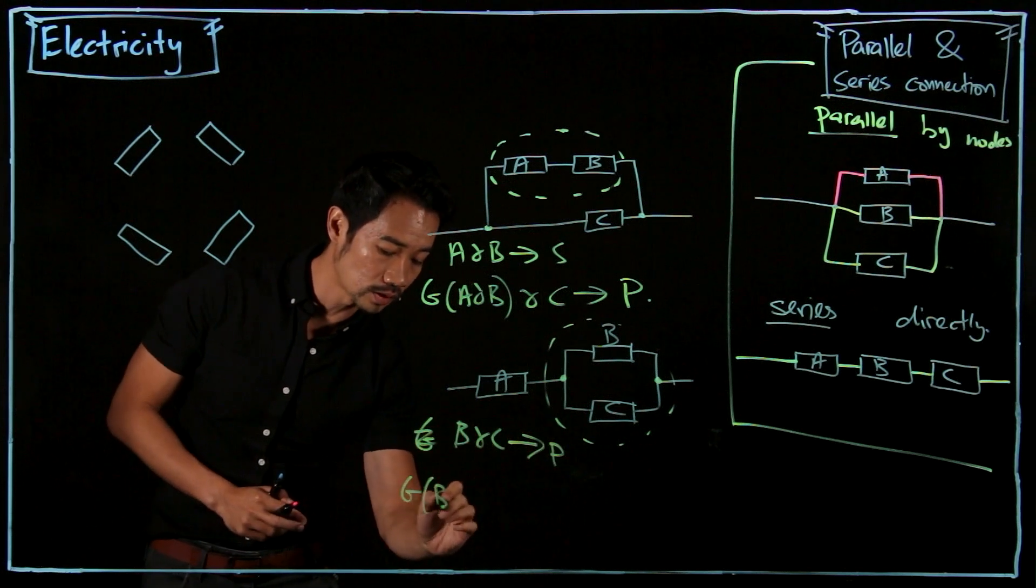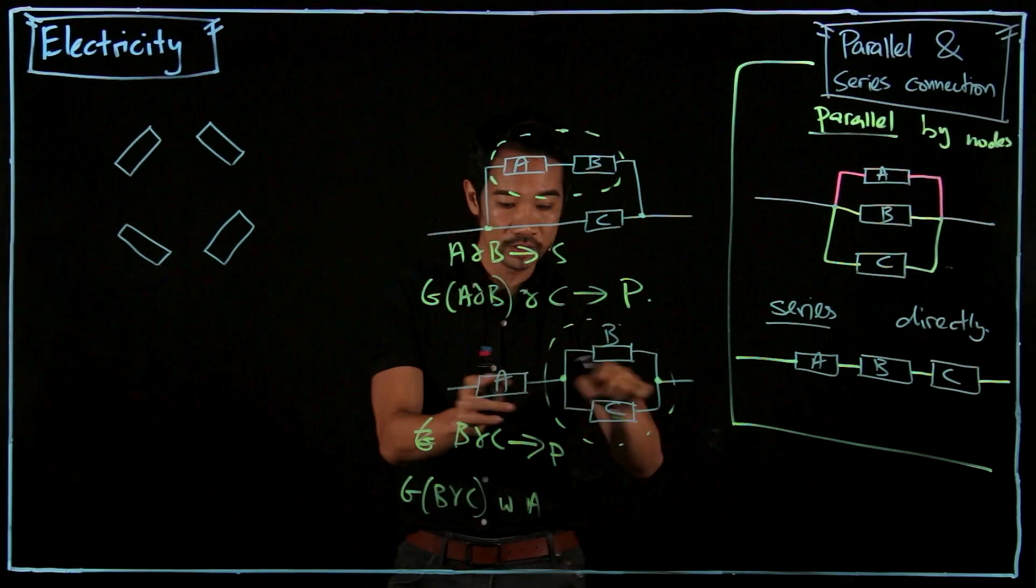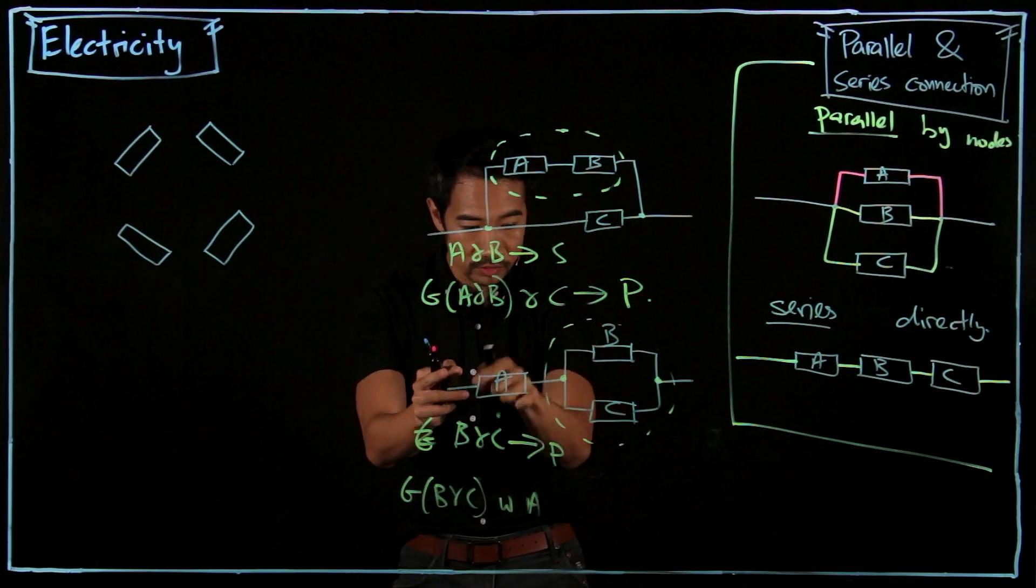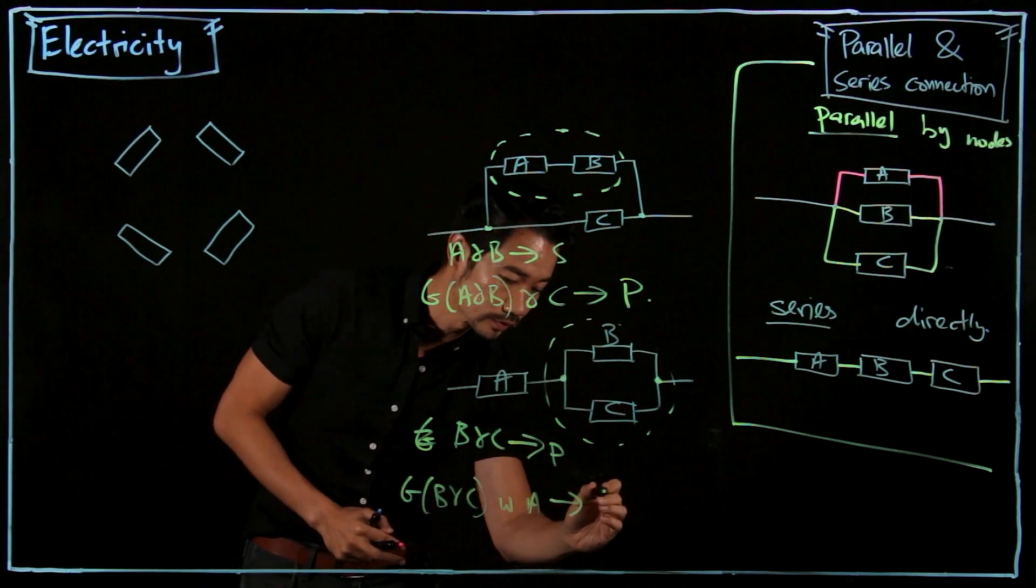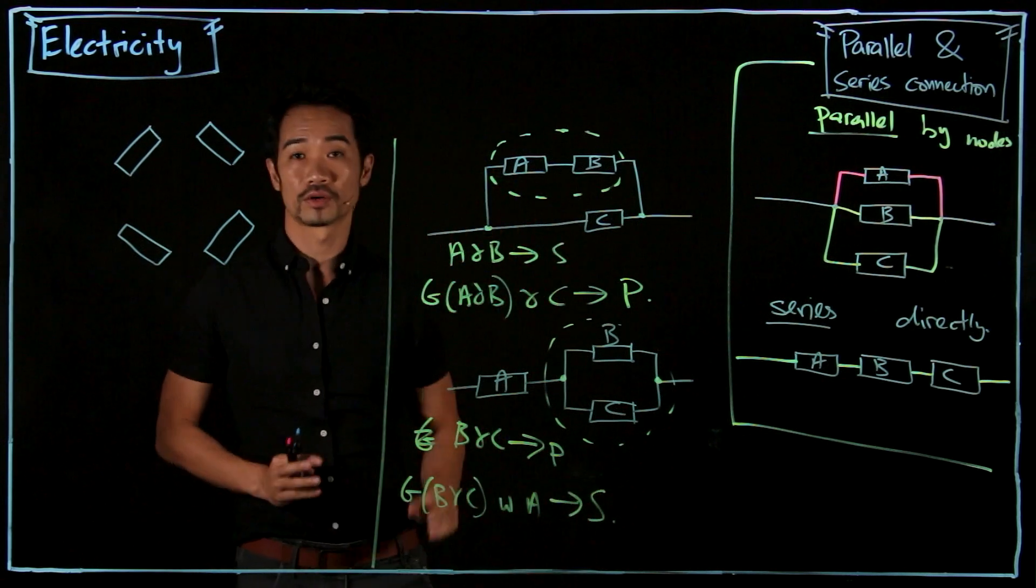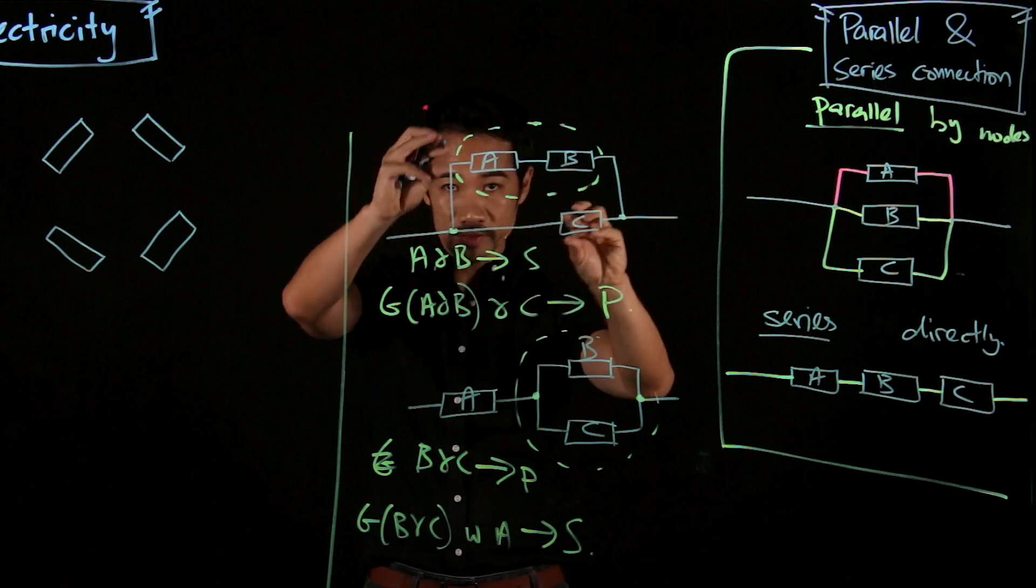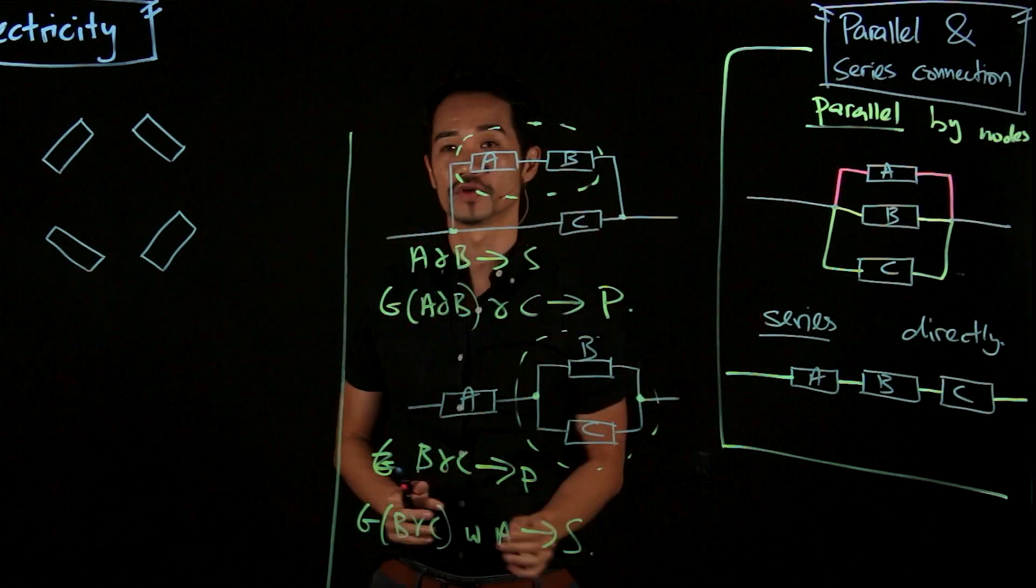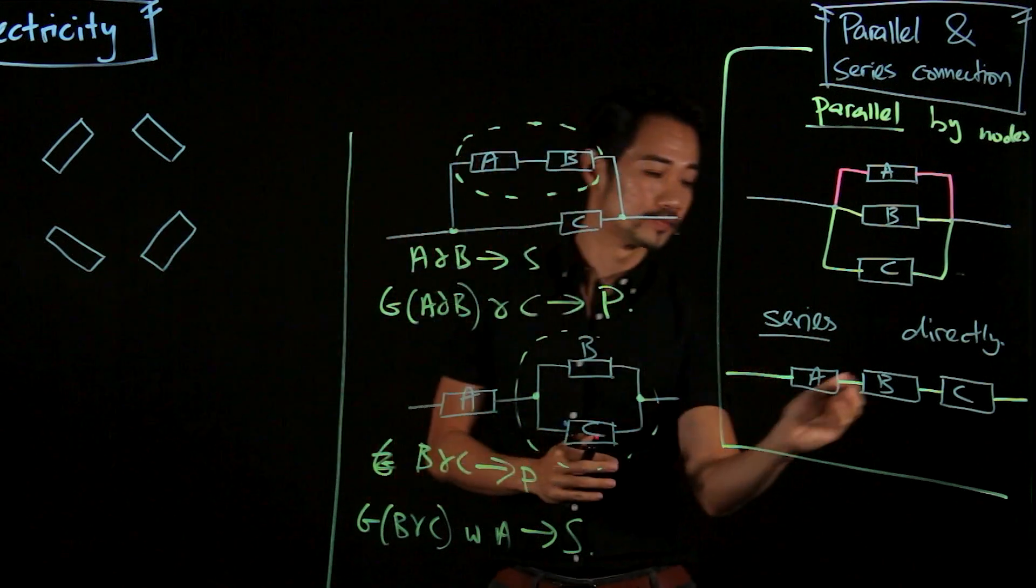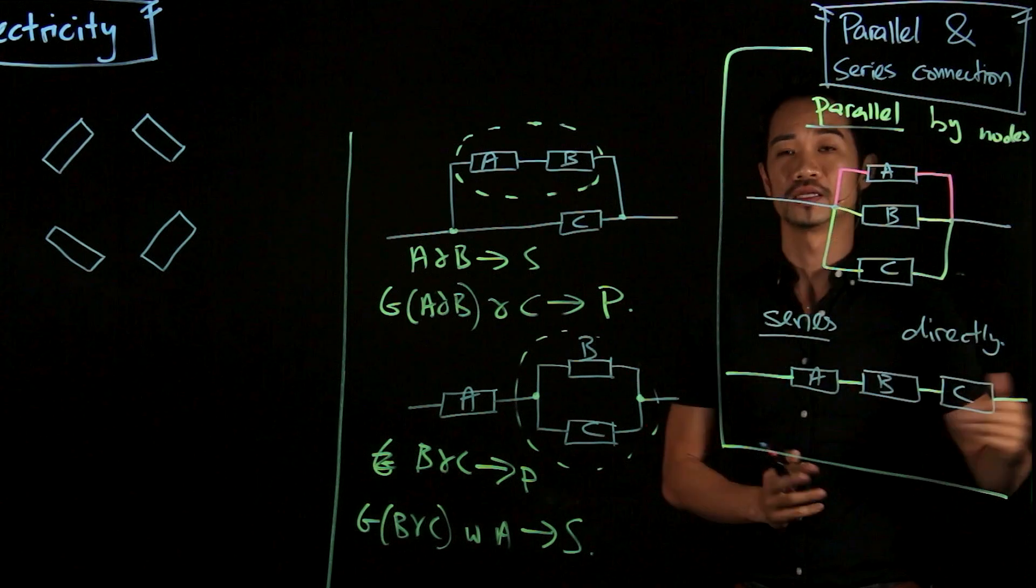So group B and C with A. This whole thing and A. So it goes straight to A. They are in series. See the difference? When it needs to go through a junction or a node, then the components are connected in a parallel fashion. If you can go directly, just like stations on one train route, then it is series.